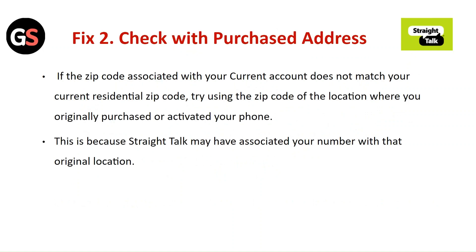Fix 2: Check with the purchased address. If the zip code associated with your current account does not match your current residential zip code, try using the zip code of the location where you originally purchased or activated your phone. Straight Talk may have associated your number with that original location.